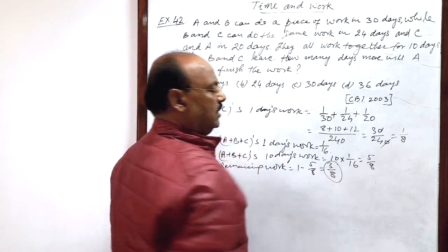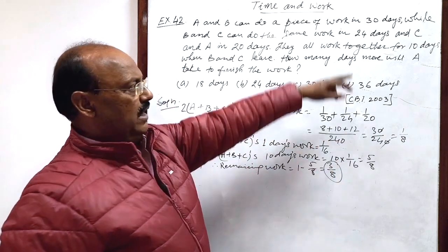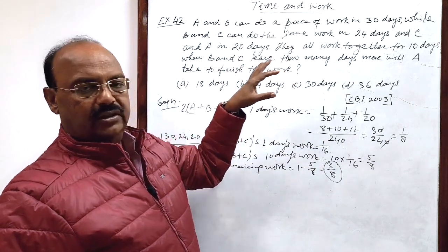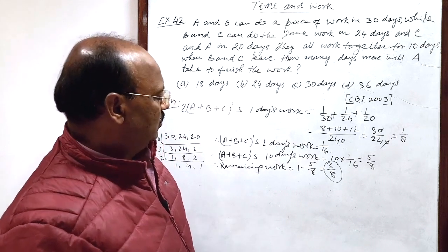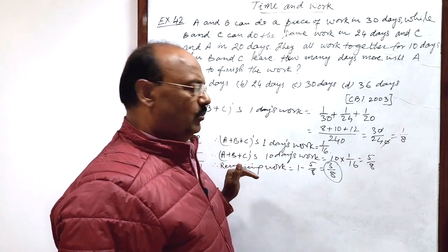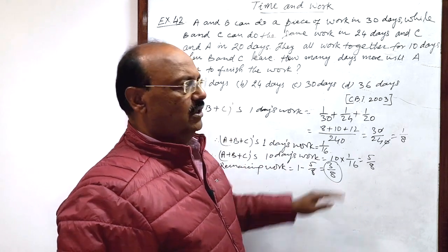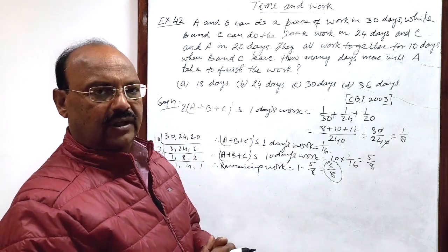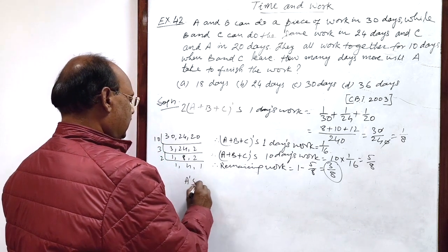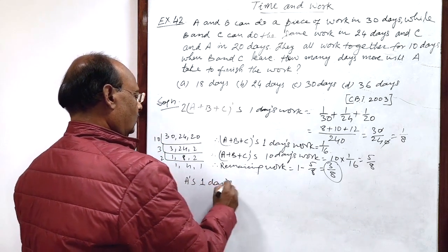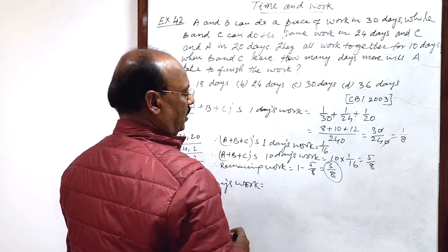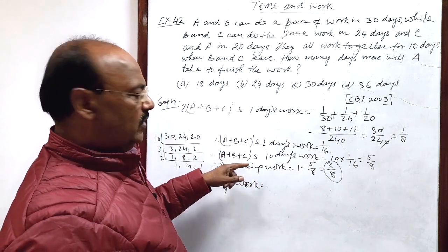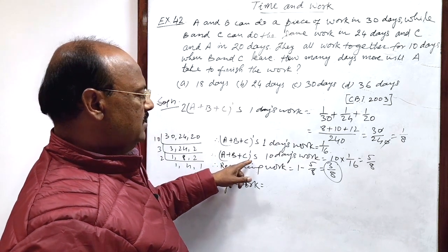Now, this much amount of work has to be finished, has to be completed by A only when B and C leave this work after working 10 days together. So, for calculation of the number of days required by A to complete this work, we need to find out how much work is done by A in 1 day.